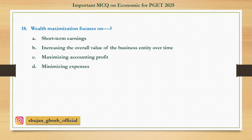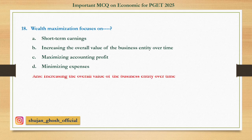Question number eighteen: Wealth maximization focuses on — option A: short-term earnings. B: increasing the overall value of the business entity over time. C: maximizing accounting profit. D: minimizing expenses. Answer: increasing the overall value of the business entity over time.